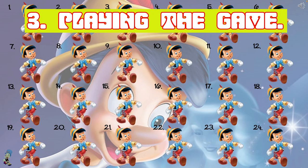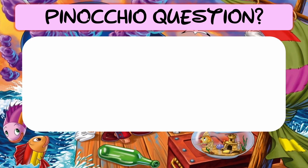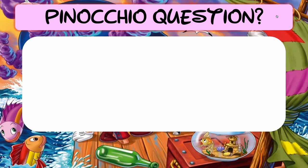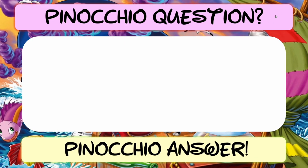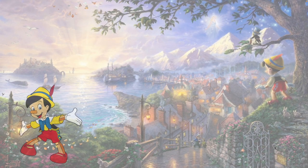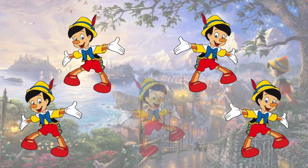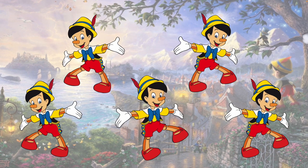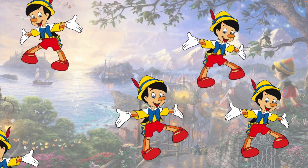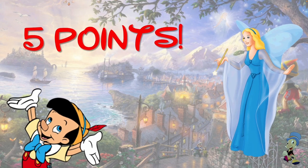Now let's talk about how to actually play this game. I'm going to choose question number two. Click on the pink rectangular box and the answer will be revealed. Simply click on the yellow rectangular box with the answer and that will take you to the points. This one is a standard point slide for five points — the Pinocchios are going to disappear and there you have it: five points.